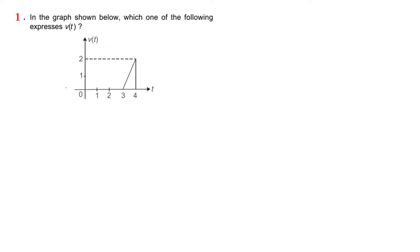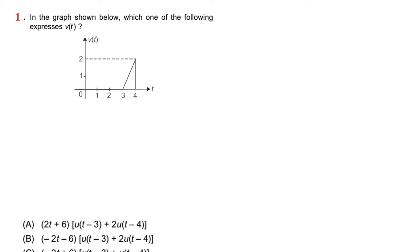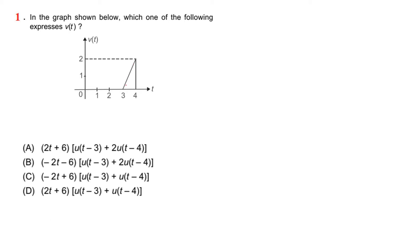See problem 1. In the graph shown below, which one of the following expresses B of t? Consider this graph. This graph consists of the combination of two signals — this is the ramp signal and this is the step signal.